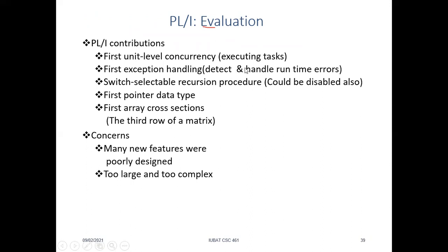The first was unit-level concurrency — we could execute multiple tasks concurrently. Then there's the concept of exception handling: how we can detect and handle runtime errors. The idea was that general users tend to make more mistakes, so exception handling was introduced to show the user what type of error they made so they could solve the issue. Then we had switch-selectable recursion procedures, the first pointer data type which could point to a memory address, and first array cross-sections.